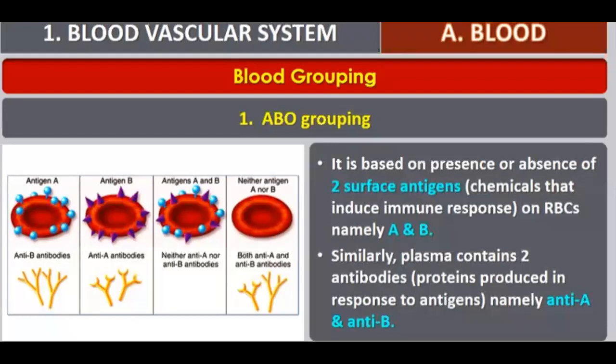In blood group AB, there are both A and B antigens present. In blood group O, there are no antigens present on the surface. Similarly, plasma contains two antibodies that are produced in response to antigens — anti-A and anti-B.